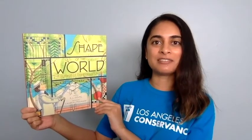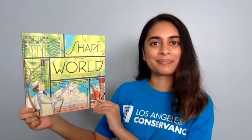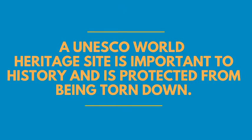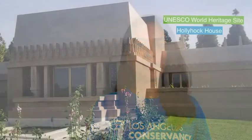What inspired Frank Lloyd Wright to change the shape of the world? He was inspired by all the beautiful shapes that he found in the nature he was surrounded by. He created beautiful designs and buildings that are enjoyed by many people today. In fact, some of his buildings are recognized as UNESCO World Heritage Sites — sites that are important to history and protected from being torn down. One of those sites designed by Frank Lloyd Wright is in the city of Los Angeles. It's called the Hollyhock House. Let's take a look at a photo of the Hollyhock House.